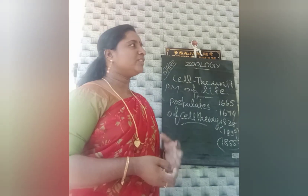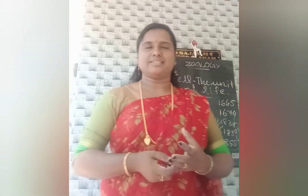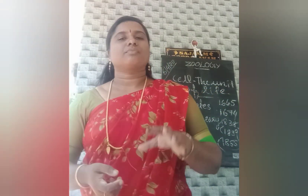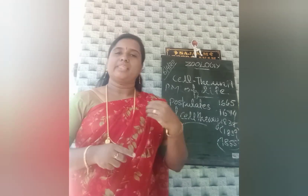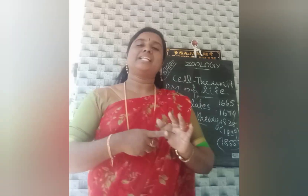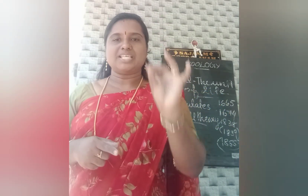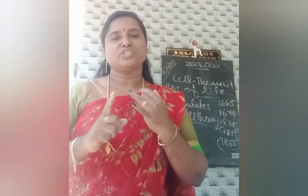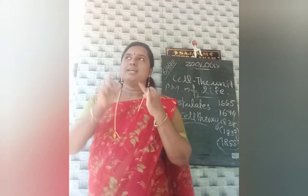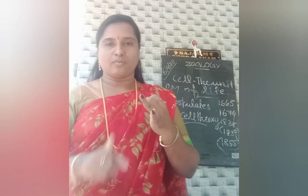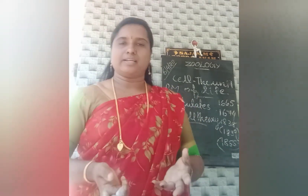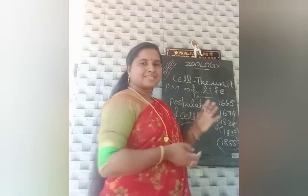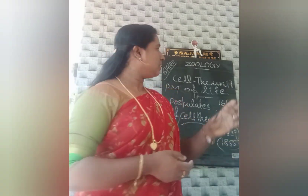Which is the largest cell? The ostrich egg is the largest cell overall. In the human body, the largest cell is the human ovum, which is a female gamete. The smallest cell is the sperm, which is the male gamete. The longest cell is the neuron.